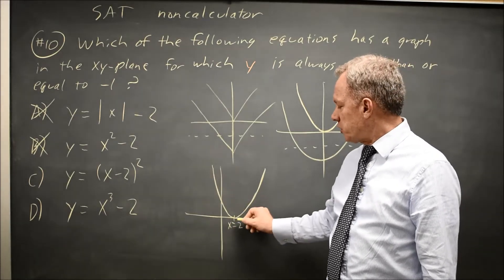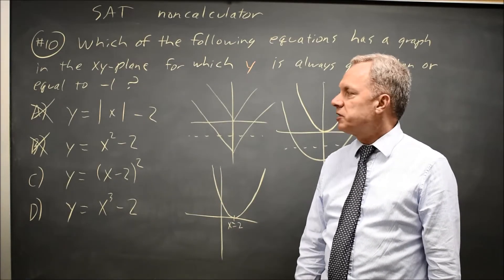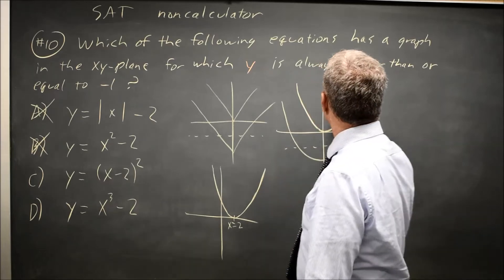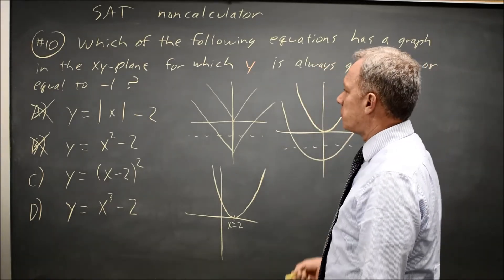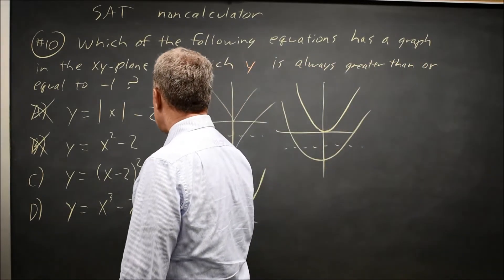This parabola opens up with its minimum value at y equals 0, so it is never less than negative 1. It's always greater than or equal to negative 1. Choice C works.